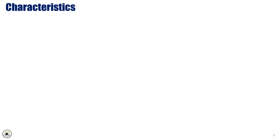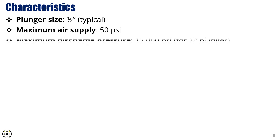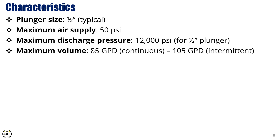Characteristics. The TechSteam Chemical Injection Pump is typically equipped with a half-inch plunger, a common size that supports a wide range of injection needs. It operates with a maximum air supply of 50 PSI, making it compatible with standard air systems available on most test sites. The pump can achieve a maximum discharge pressure of 12,000 PSI with a half-inch plunger, suitable for high-pressure injection scenarios. For flow capacity, the pump delivers up to 85 gallons per day during continuous operation, and up to 105 gallons per day on an intermittent cycle, providing flexibility depending on operational requirements.